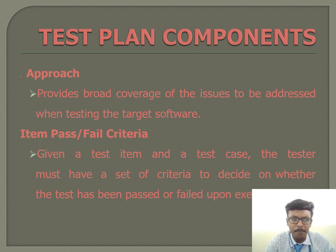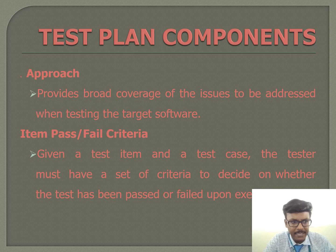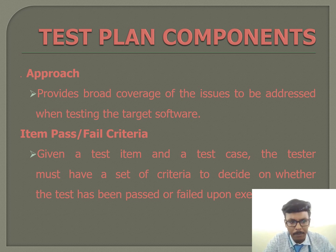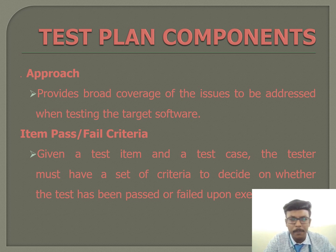Next is item pass or fail criteria. Given a test item, the tester must have a set of criteria to decide whether the test has passed or failed upon execution. A failure occurs when the actual output produced by the software does not agree with what was expected. Test scales are used to rate failures or defects with respect to their impact on the customer or user.